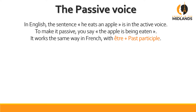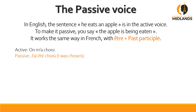It works the same way in French, with the use of être and the past participle. For instance, the active voice: 'On m'a choisi' — one chose me. In the active voice in French, when the person doing the action is not defined, we use 'on' for one or someone. The passive form would be 'j'ai été choisi' — I was chosen, instead of 'one chose me'.